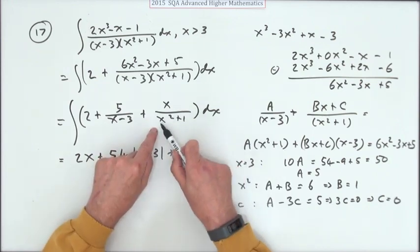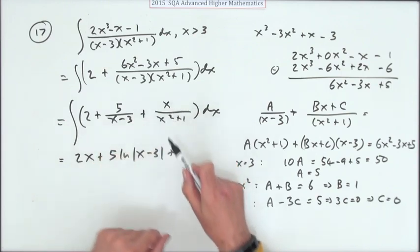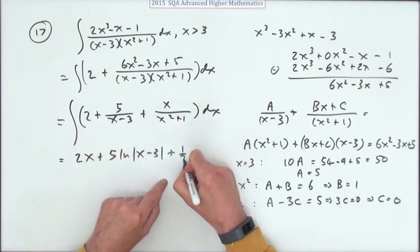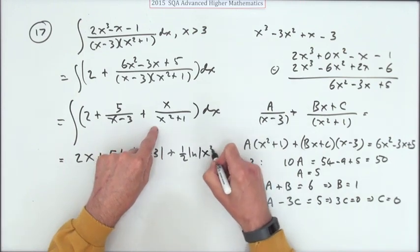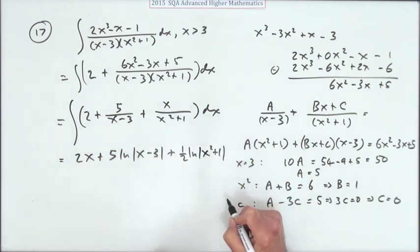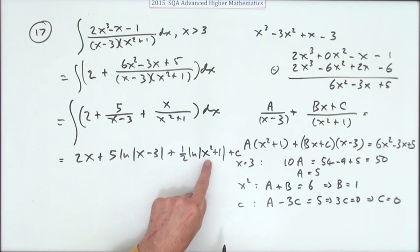Without having to do any substitutions, by inspection, the numerator of this is related to the derivative of the denominator. The derivative of the denominator is 2x, so that's half of the derivative of the denominator. That would just be a half of ln of the denominator plus C. By inspection, logarithm of that would be 1 over that with its derivative on top. That was only half of its derivative that was on top.